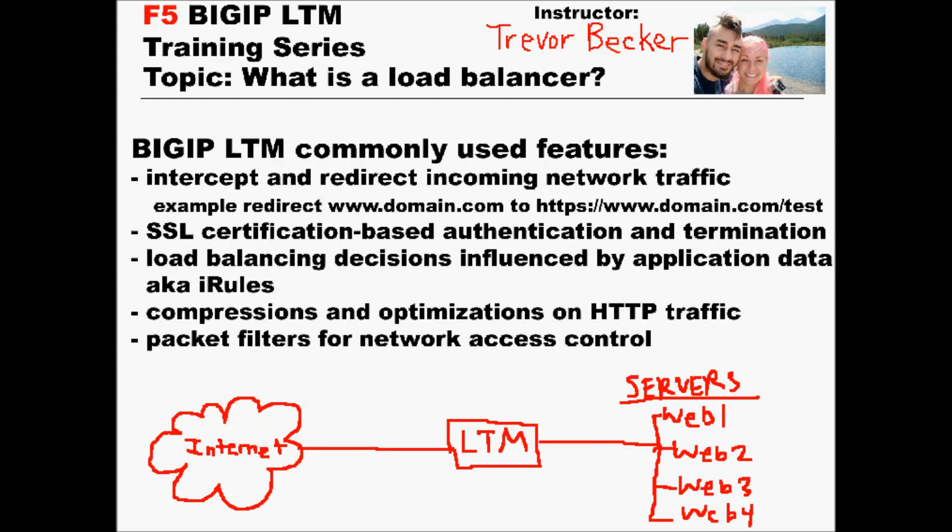Other features the Big IP LTM system offers include the ability to intercept and redirect incoming networking traffic — an example of that would be an application URL or URI redirect. The Big IP LTM also has the ability to perform SSL certificate-based authentication and termination. It has a dedicated SSL module installed reserved only to encrypt and re-encrypt traffic, meaning web servers no longer have to waste valuable CPU cycles encrypting and re-encrypting traffic — the LTM can do it for you.